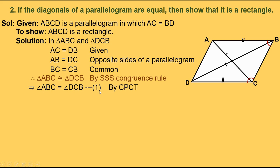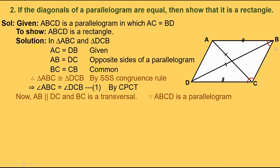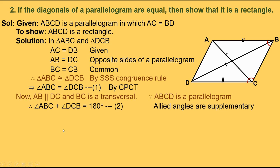Let's take that as equation 1. Now, AB is parallel to DC and BC is the transversal. Since ABCD is a parallelogram, therefore angle ABC plus angle DCB equals 180 degrees — allied angles are supplementary. Let's take that as equation 2. That is, twice angle DCB equals 180 degrees, since angle ABC equals angle DCB from equation 1. So angle DCB equals 180 degrees divided by 2.